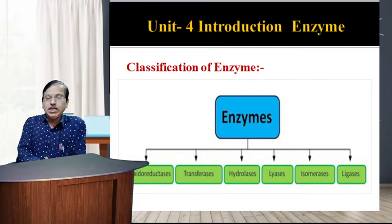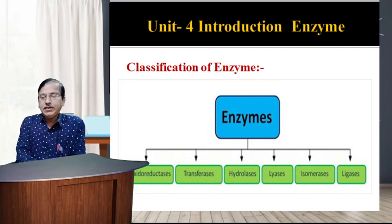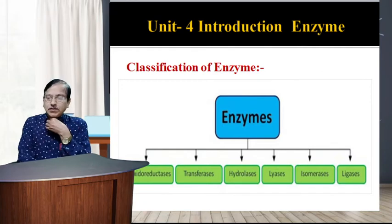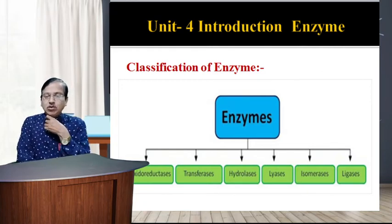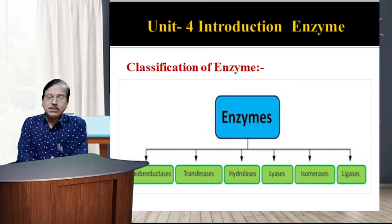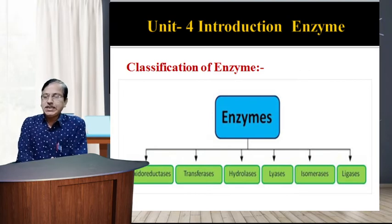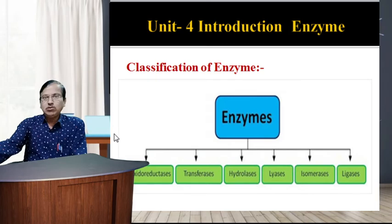The International Union of Biochemists (IUB) appointed an enzyme commission in 1961 for classification purposes. This committee made a thorough study of existing enzymes and devised basic principles for the classification and nomenclature of enzymes. Since 1964, the IUB system of enzyme classification has been in force. Enzymes are divided into six major classes according to their type of reaction, as shown in the schematic representation.